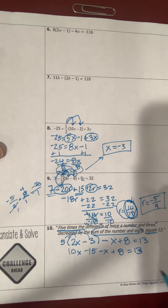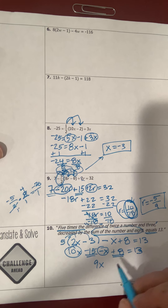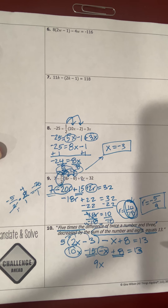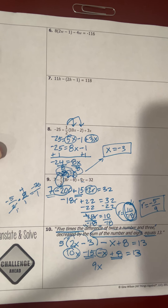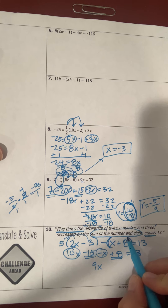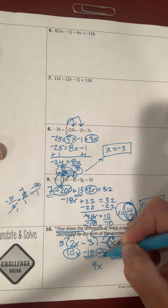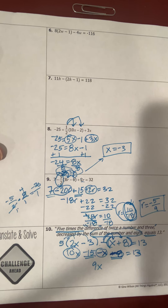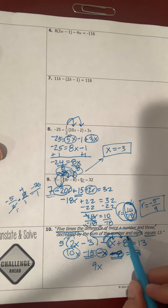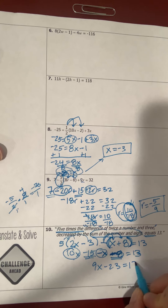Distributing gives 10x minus 15 minus x plus 8 equals 13. But wait — I need to distribute that negative sign across (x + 8), so it's minus x minus 8, not plus 8. I made a mistake by not distributing the negative. Because we're decreasing by a binomial, it must be in parentheses and distributed. Correcting: 9x, and negative 15 plus negative 8 is negative 23, set equal to 13.